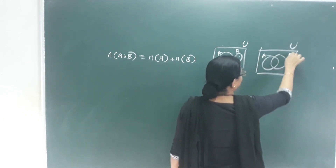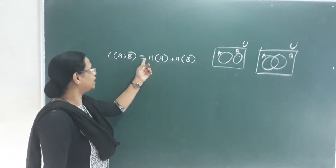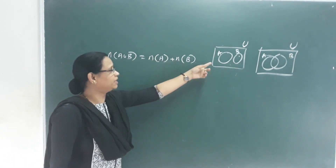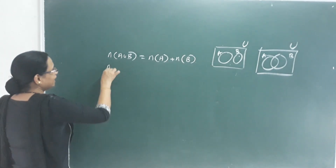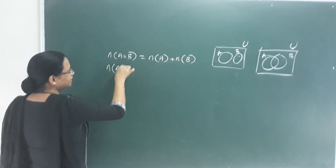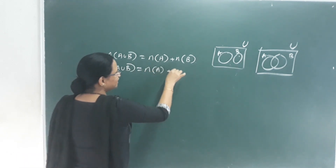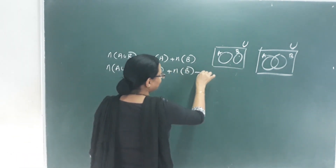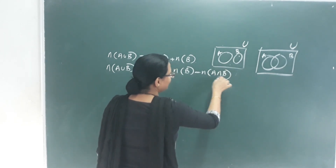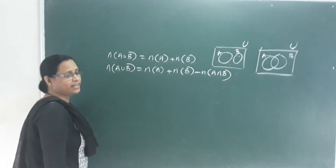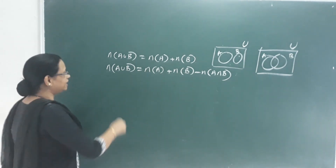When A and B have common elements, the number of A union B is equal to the number of A plus the number of B minus the number of A intersection B. Since intersection exists, we subtract it.